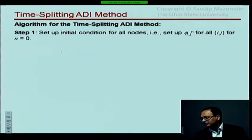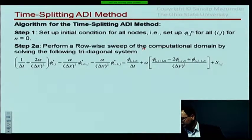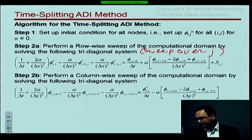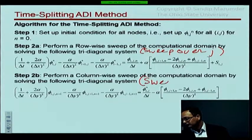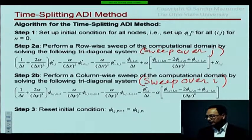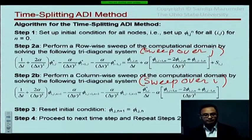Summary of the algorithm: Step 1, set up initial conditions for all nodes. Step 2, perform a row-wise sweep over j, solving the tridiagonal equation for phi-star—starting from j=2 if Dirichlet boundary conditions apply at the bottom wall. Step 3, perform a column-wise sweep over i, solving the second tridiagonal equation for φ^{n+1}. There is no iteration. Reset the solution as the new initial condition and proceed to the next time step, repeating steps 2 and 3.